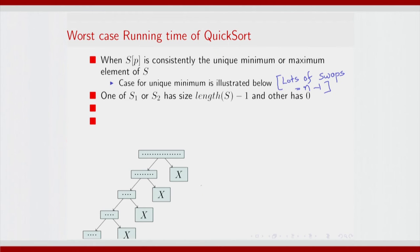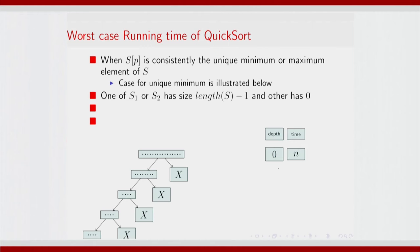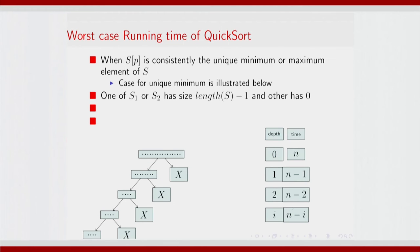Let us try and understand what the cost will be. At depth 0 the time will be n, because you have to scan all the elements and do those swaps. At the next depth you will have to scan n minus 1 elements, then n minus 2 elements. At depth i the cost is n minus i elements, up to depth n minus 1 where you have one element.